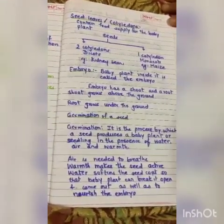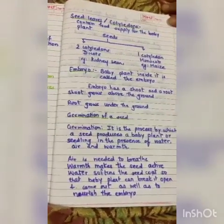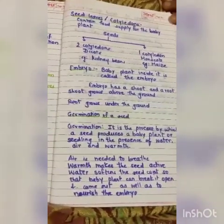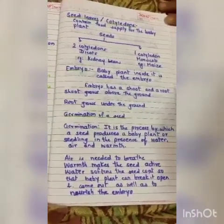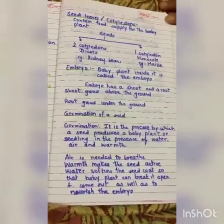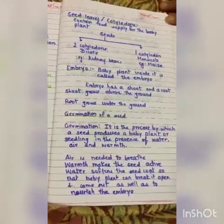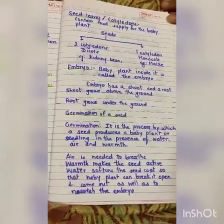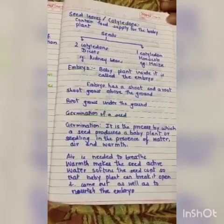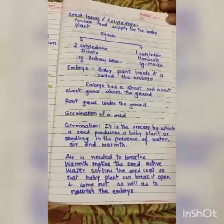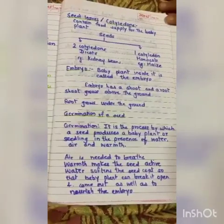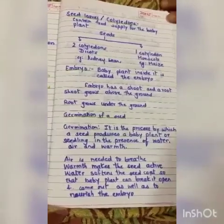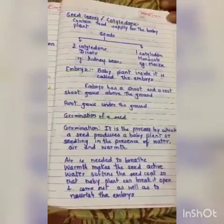The baby plant inside the seed is called the embryo. The embryo has a shoot and a root — the shoot grows above the ground while the root grows under the ground. Germination is the process by which a seed produces a baby plant or seedling in the presence of water, air, and warmth. Air is needed to breathe, warmth makes the seed active, and water softens the seed coat so the baby plant can break out, and also nourishes the embryo.